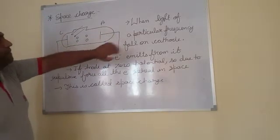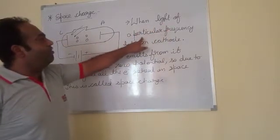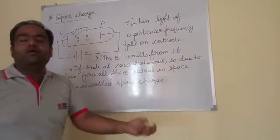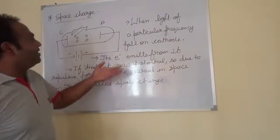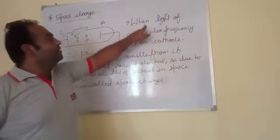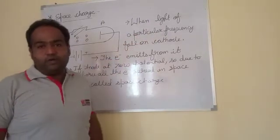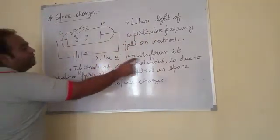Let's look here. When light of a particular frequency - this is an important point in many videos, I have missed that, but remember that - when light of a particular frequency falls on the cathode, the electrons emit from it.